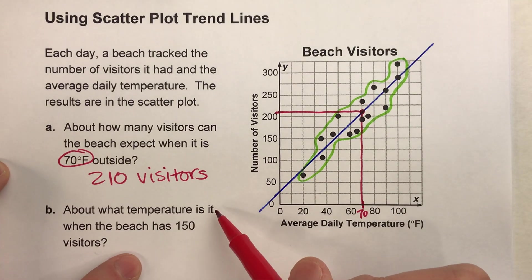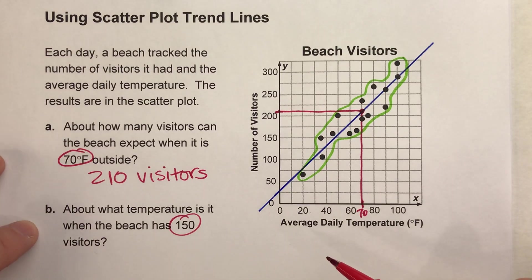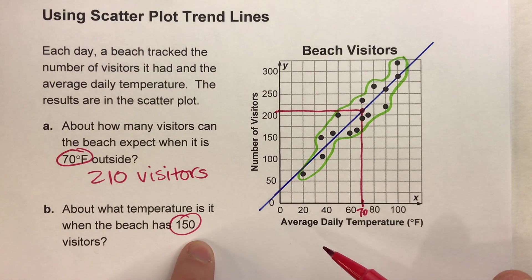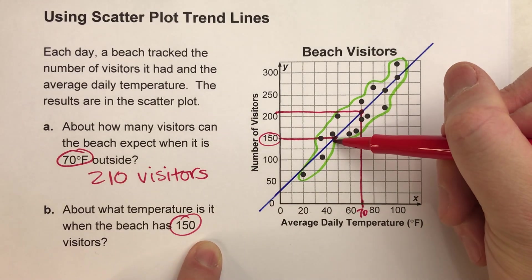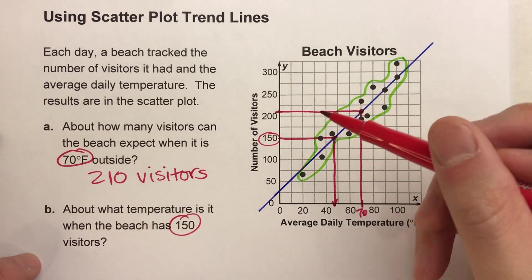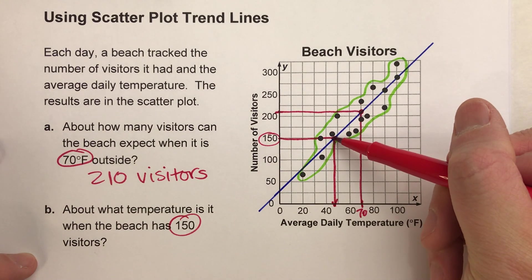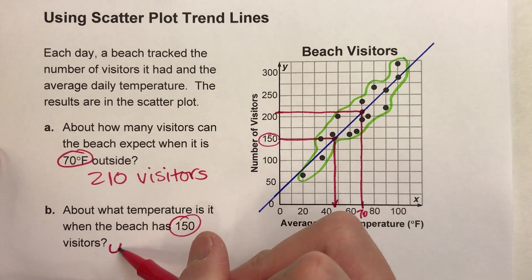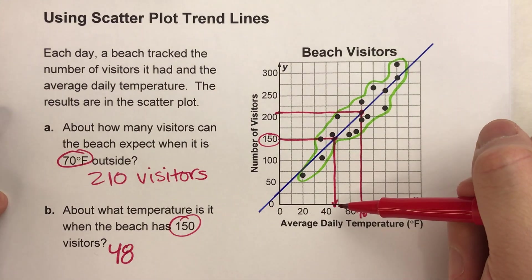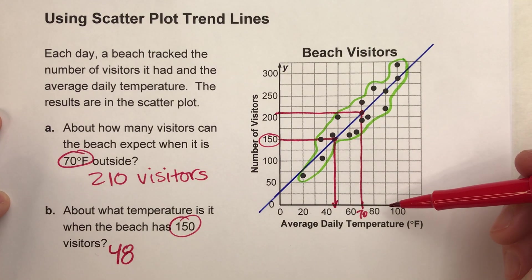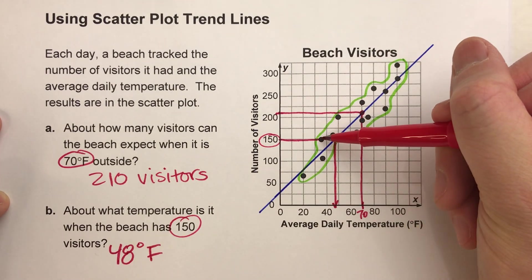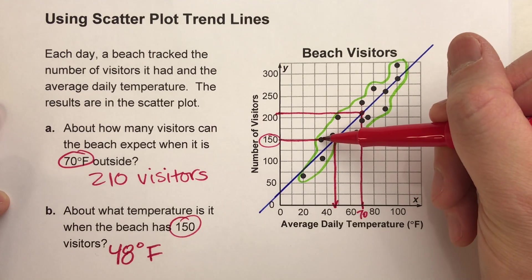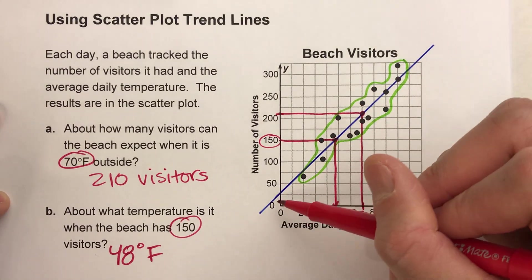Second question: about what temperature is it when the beach has 150 visitors? This time it's the opposite — it gives you the number of visitors. I have to find 150 visitors right here, then go over until I hit the trend line, and then go straight down to the other axis to get the temperature. It doesn't quite hit 50 — it's a little below 50, so let's say about 48 degrees Fahrenheit. The best we can do here is estimate, because we don't know exact numbers. Notice 150 does go through one of our data points, but we're basing our answer off the trend line — that average of all our data.